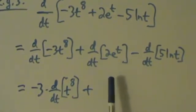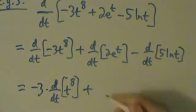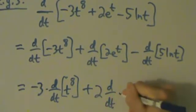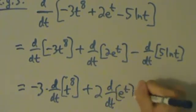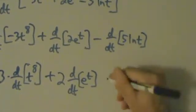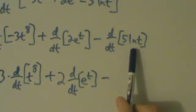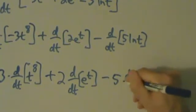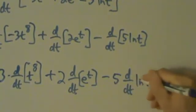Here, now we have plus d/dt of 2e^t. So 2 is just a constant. So we'll just pull that out of the derivative. So d/dt and then e^t. And then minus d/dt of 5ln(t). So 5 is just a constant, so we can pull it out. So what we have is 5 d/dt of natural log of t.